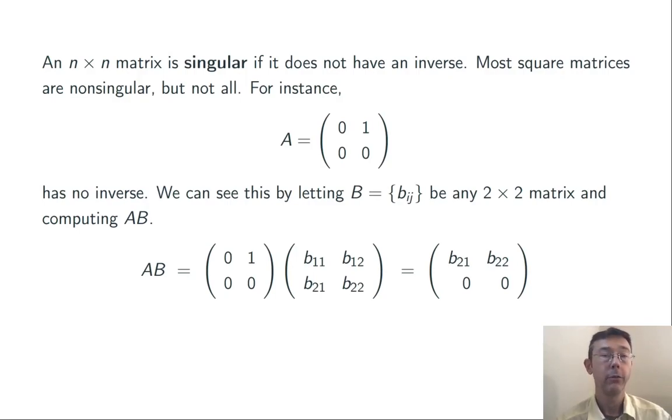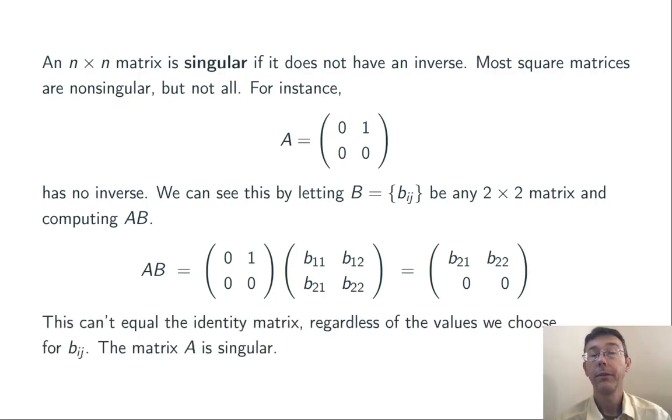Now if there were an inverse B, we should be able to get the identity matrix here, but that's impossible. The lower right-hand entry is going to be 0 regardless of the values we pick for the B_ij's. So this matrix A is going to be singular.